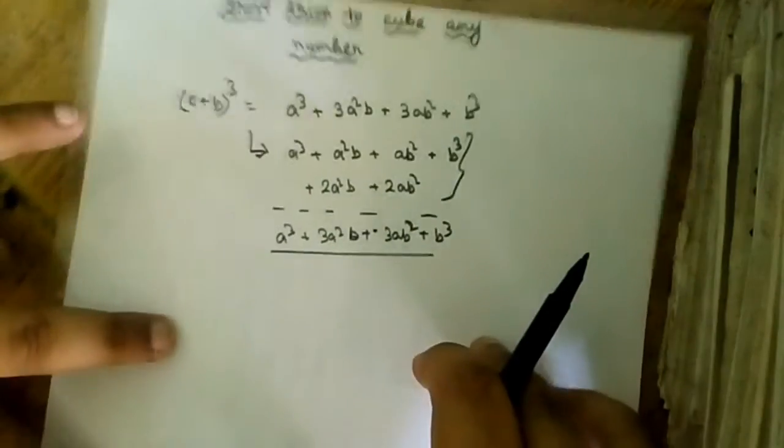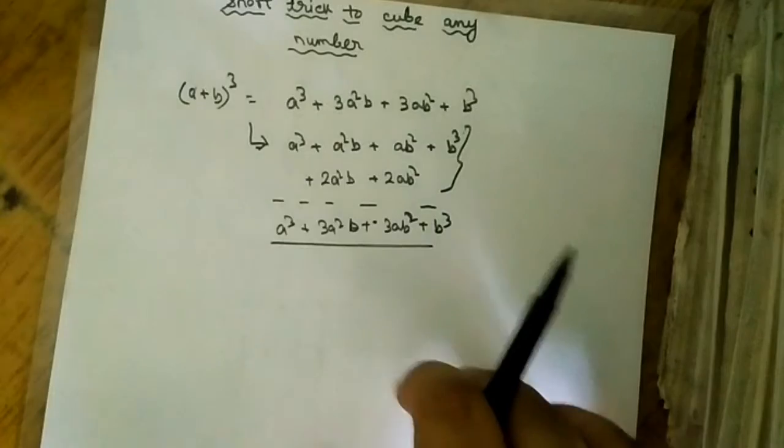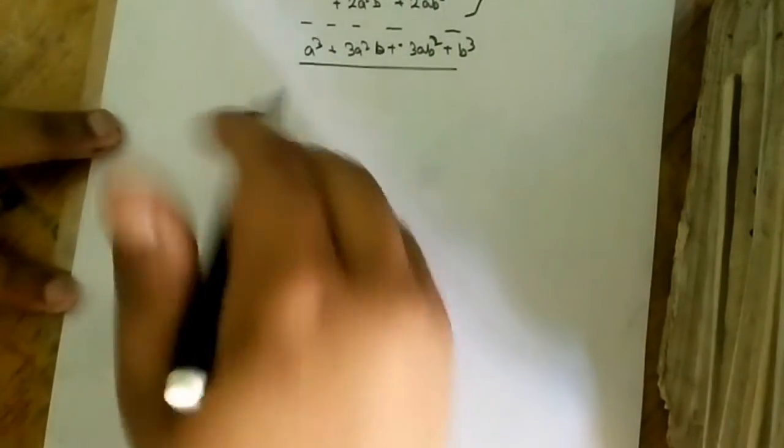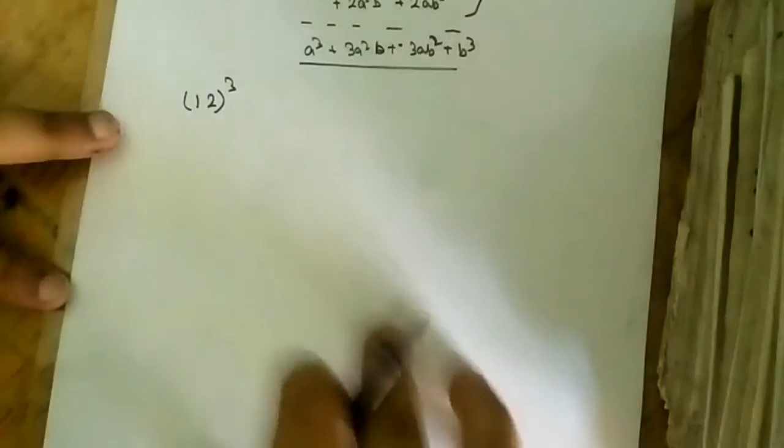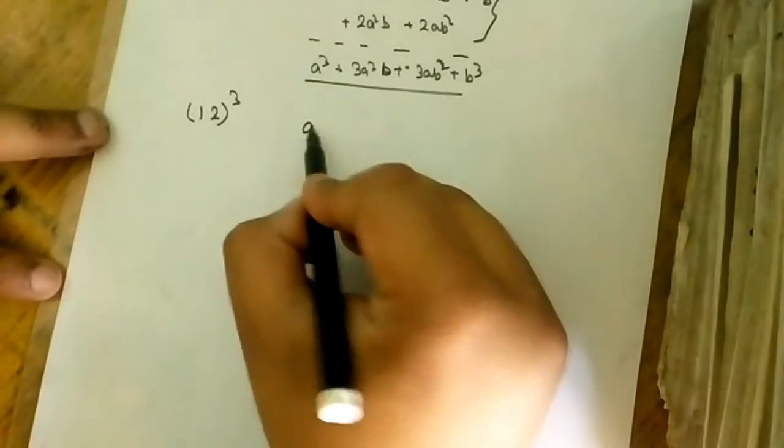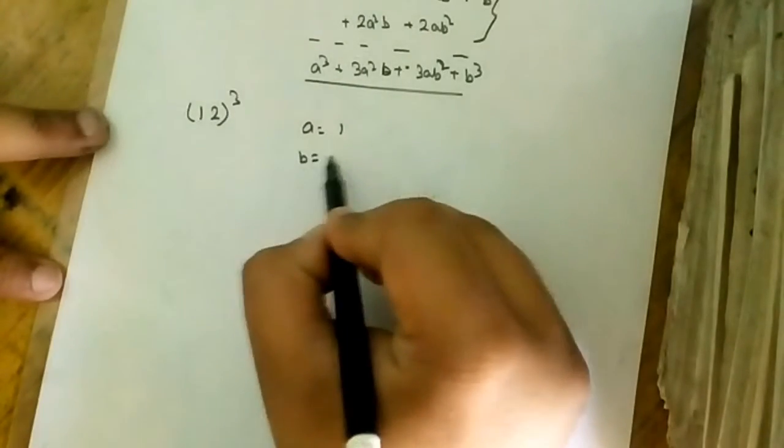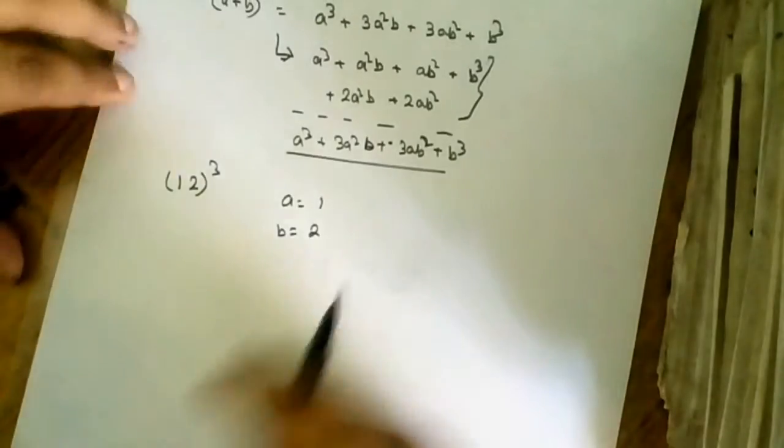I will show you how to cube any number within a second. Let's say any number, 12 cube. How can I do this? Let's say a is equals to 1 and b is equals to 2. Now just